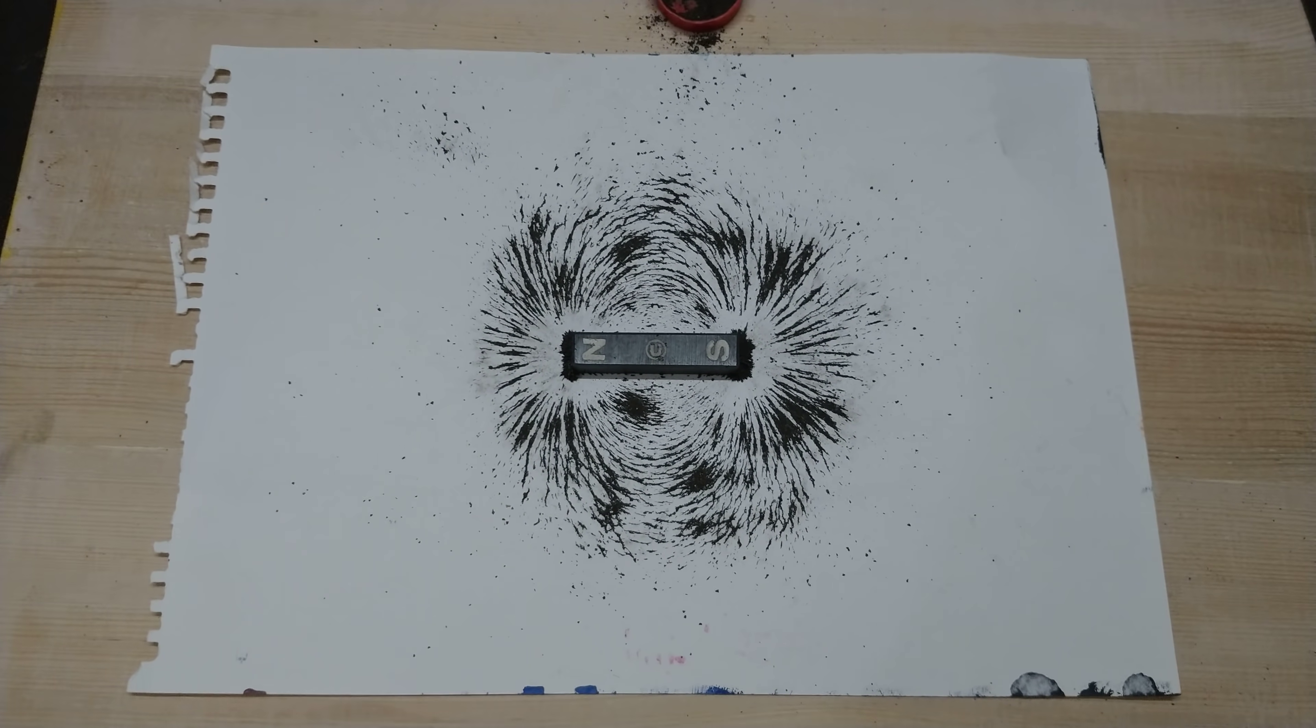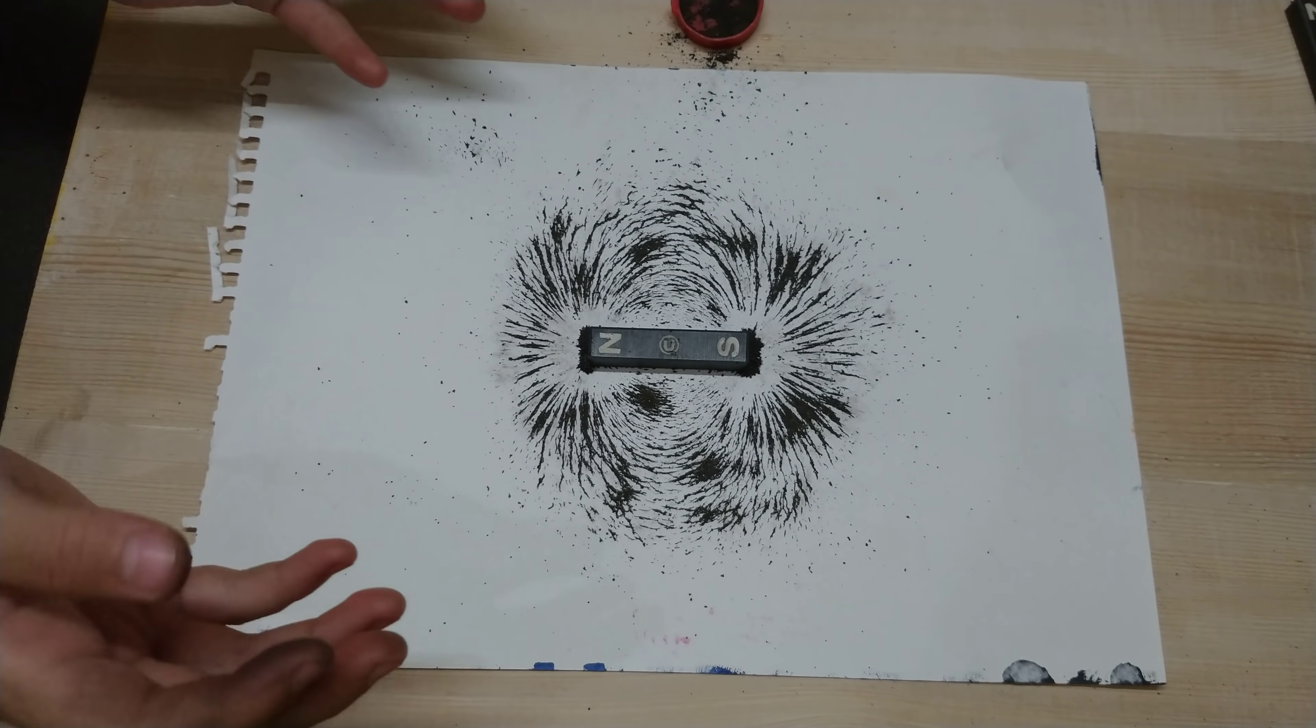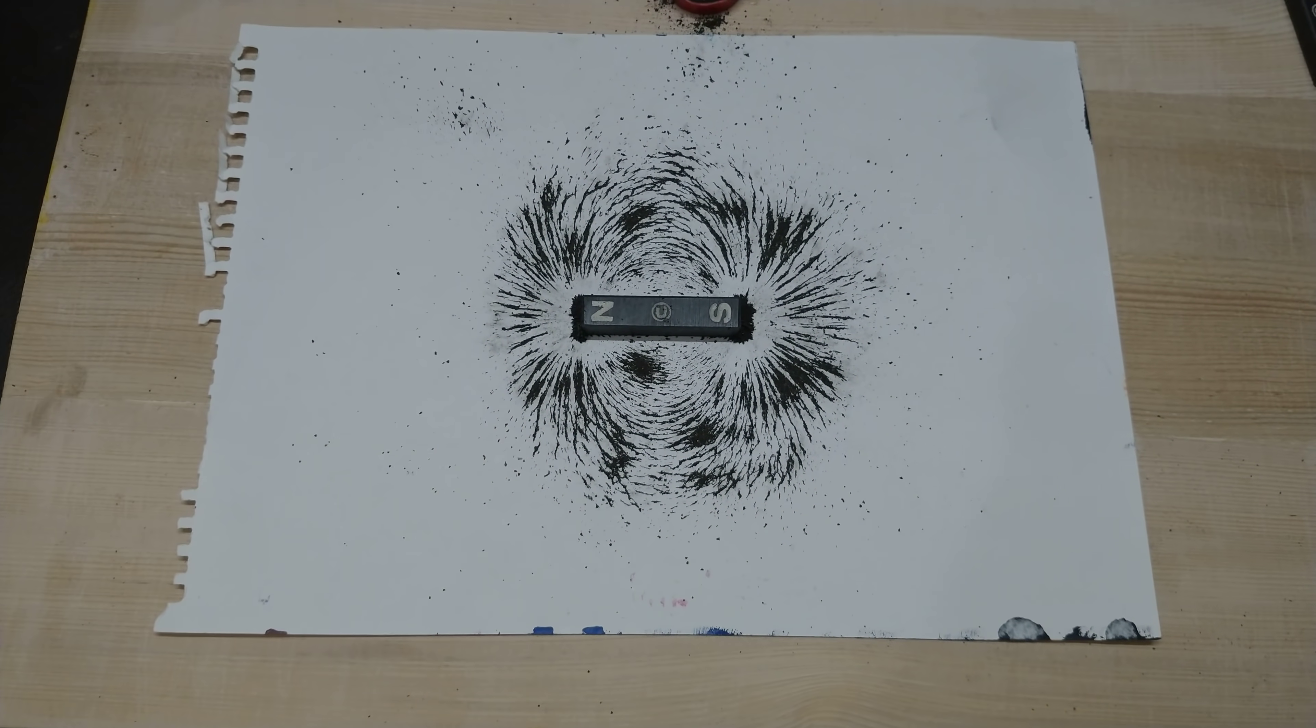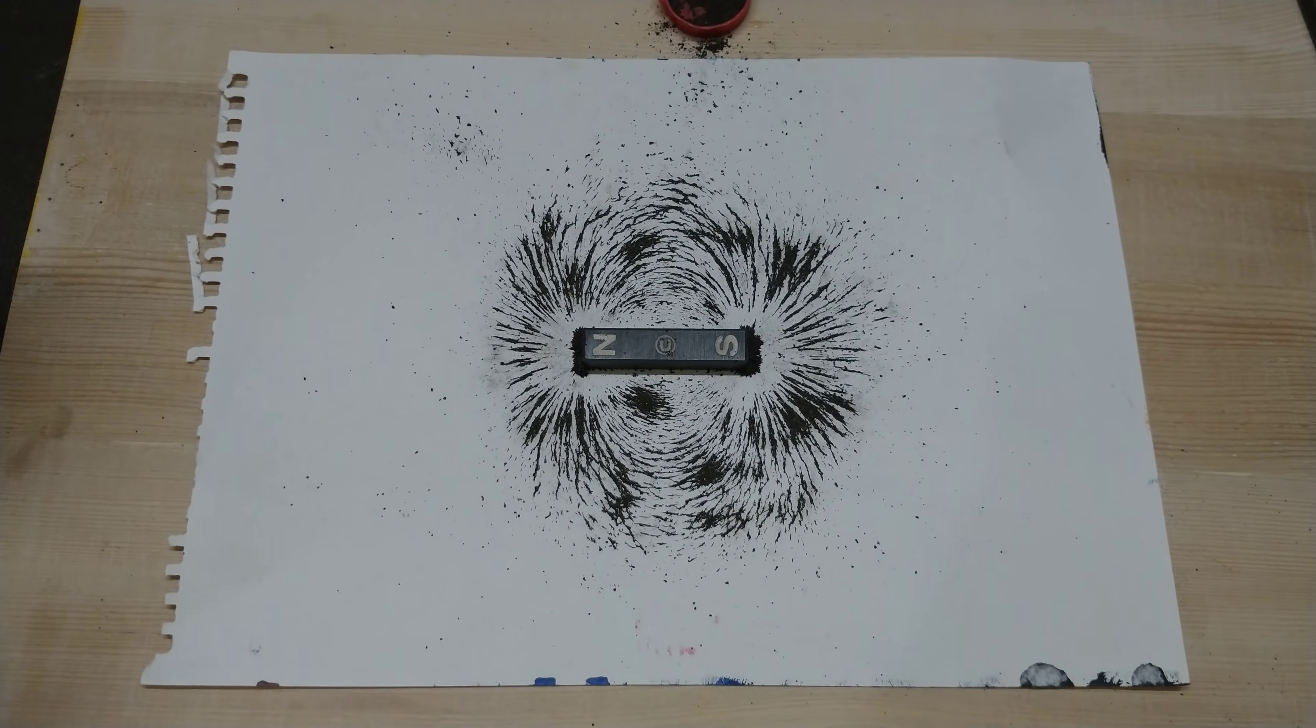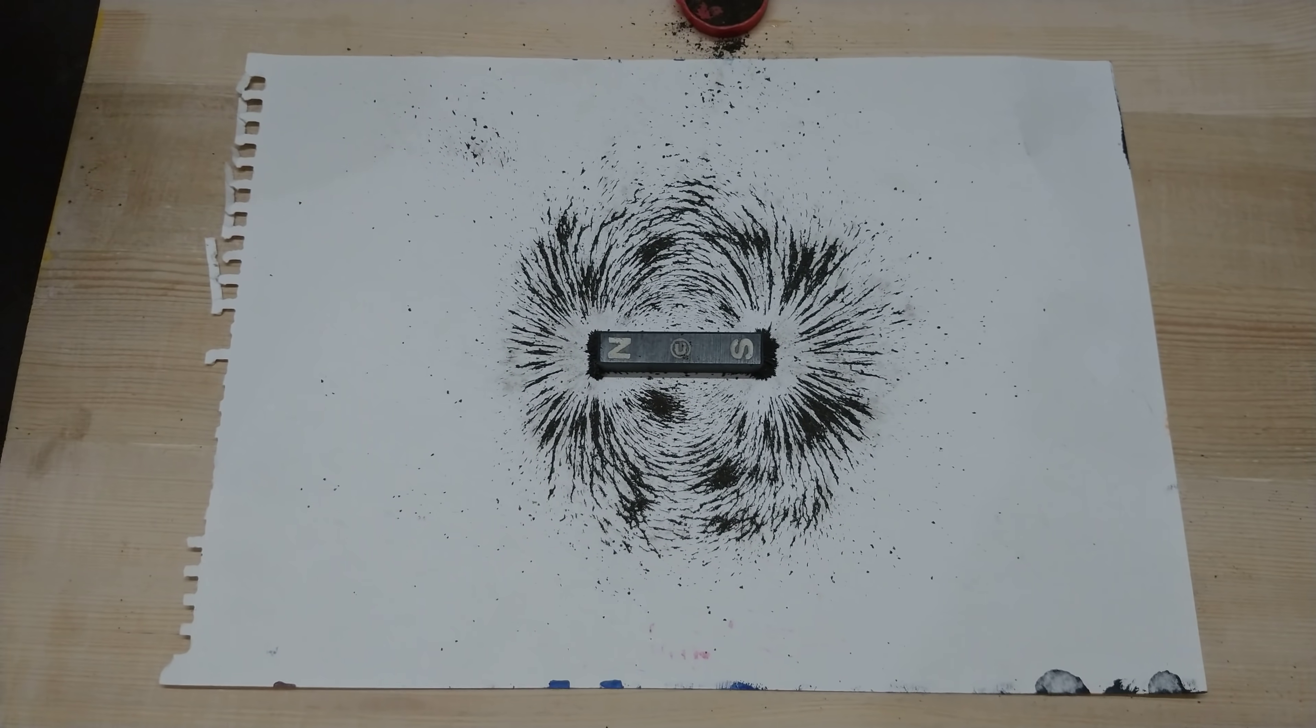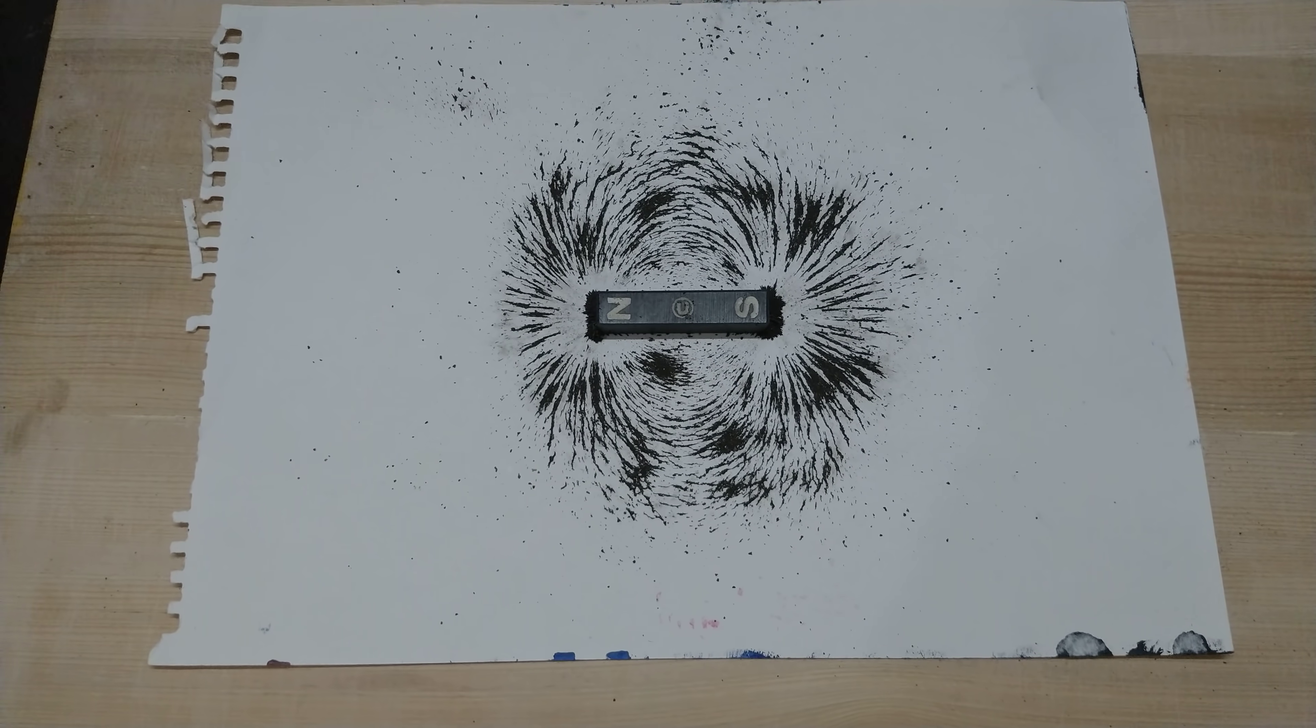Now these are what? These are the lines of force, lines of forces. And they have been made around a magnetic, a bar magnet, and with the help of what? Iron filings.